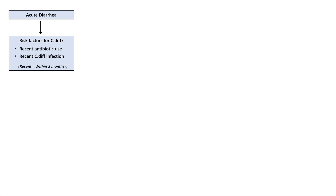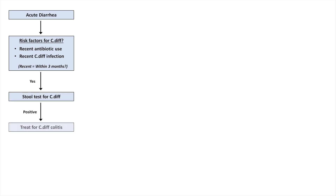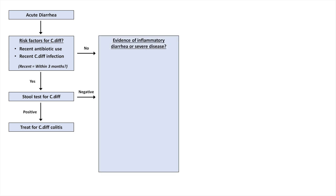Now let me show you a flowchart which summarizes my stepwise approach to acute diarrhea. The first question I consider is whether the patient has risk factors for C. diff — specifically relatively recent antibiotic use or previous C. diff infection. For this specific question, recent typically means within the last 3 months, give or take. If yes, test for C. diff, and if positive, you're done with the diagnostic workup. On the other hand, if the patient has either no risk factors for C. diff or testing was negative, next ask whether the patient has evidence of inflammatory diarrhea or severe disease irrespective of subtype.